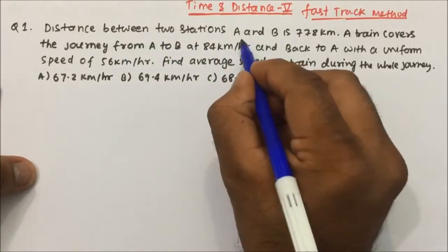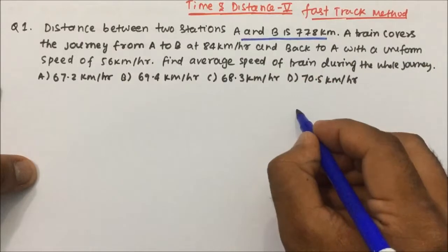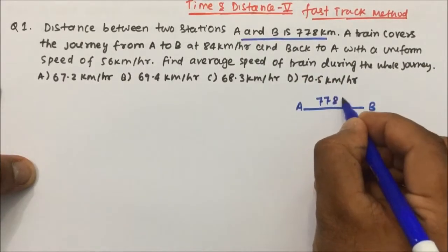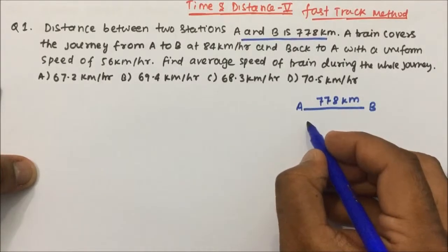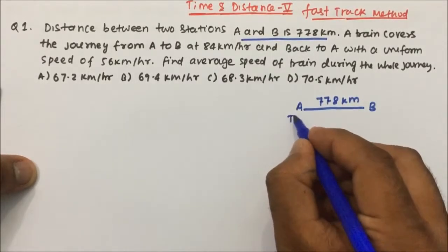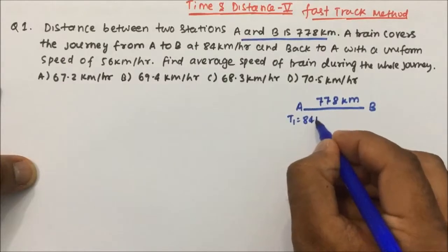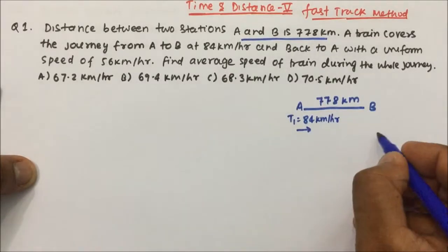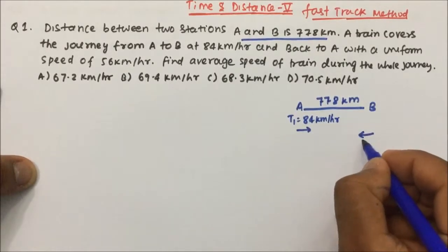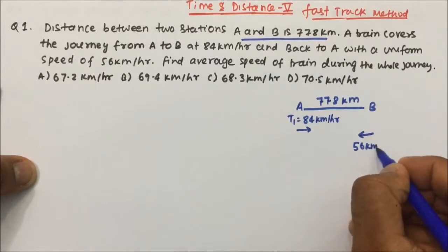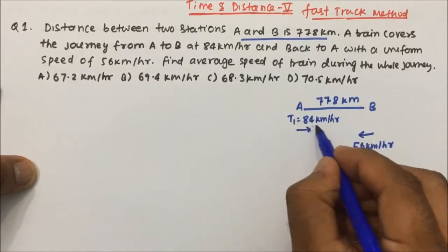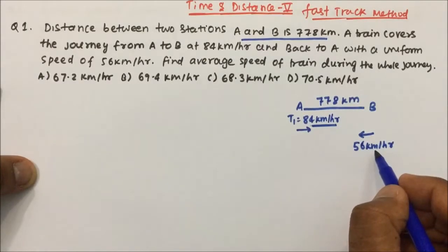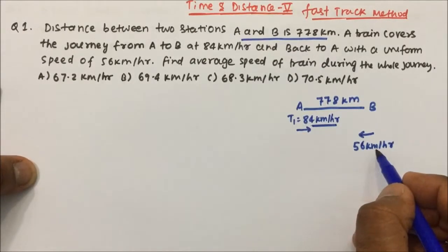The distance between two stations A and B is 778 km. A train covers the journey from A to B at 84 km per hour and back to A at the speed of 56 km per hour. So from A to B the speed is 84 km/h and from B to A the speed is 56 km/h. Find the average speed of the train during the whole journey.